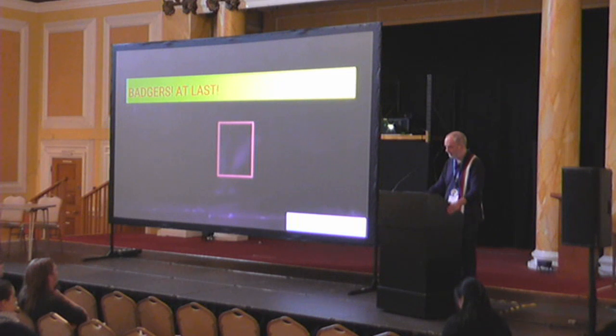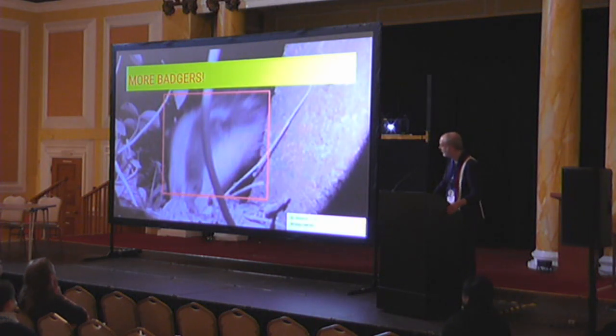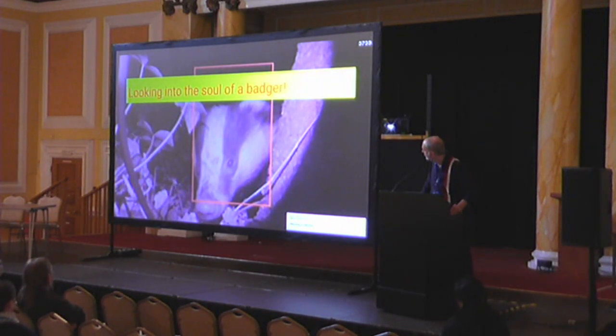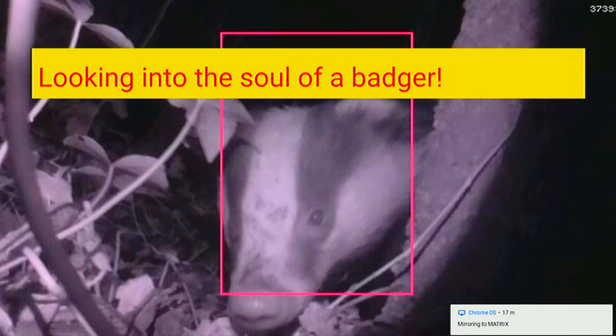And then there were the badgers — at last! This was a brilliant moment. Maybe it sounds sad, but I'd never seen a badger in real life before. It's a bit blurry because it's far away; probably need a more powerful infrared light. The Zero View cameras have got two infrared lights on either side, so you don't need to buy another — they're really easy to set up. There are more badgers and a close-up of a badger's nose — I think it's a badger's nose — and a lovely picture looking into the soul of the badger.